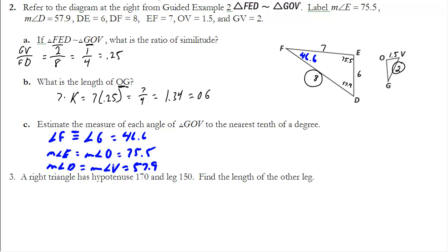So remember as we look at similar triangles, although their side lengths are proportional, their angles are going to be congruent to each other.